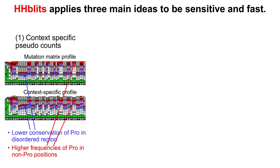Let's talk about what makes HHBlits sensitive and fast. I'll break it down into three main ideas. The first is context-specific pseudocounts. When you start with a normal protein sequence, the best thing you can do initially is use a substitution matrix like BLOSUM62, giving each amino acid a substitution vector. But this doesn't really reflect how proteins work, because proteins have different substitution probabilities per residue position. HHBlits uses context-specific profiles to estimate how a profile might look for a sequence by looking at an amino acid context of 13 residues and predicting the middle position of that window.